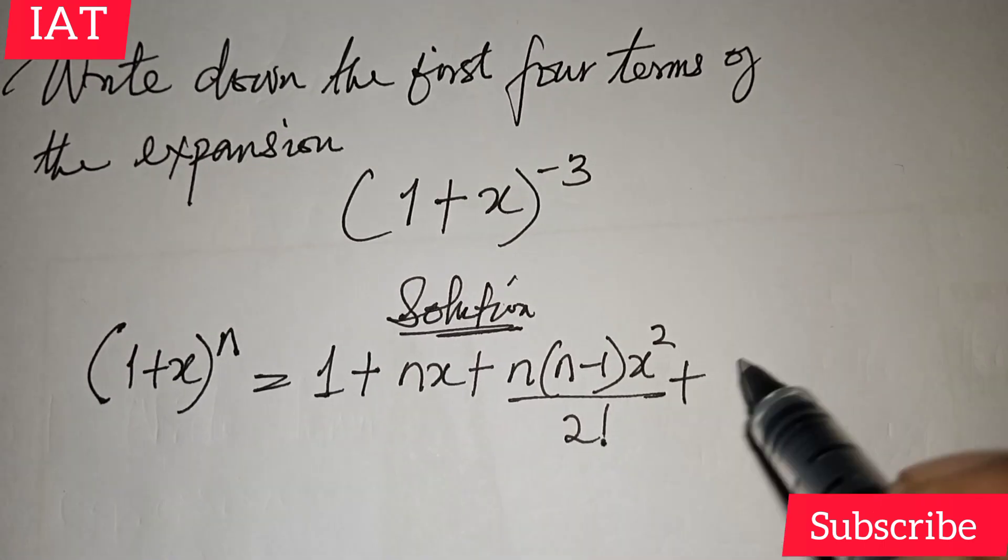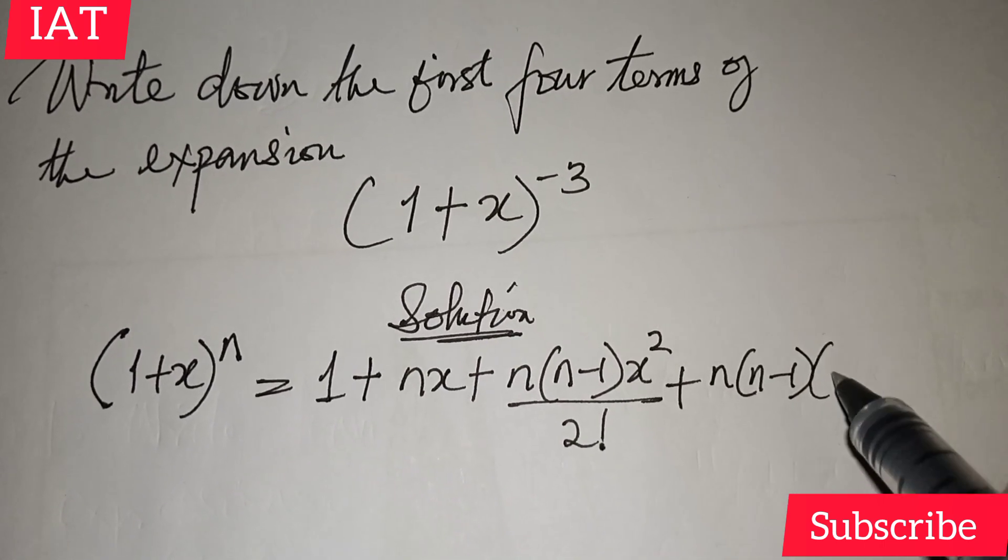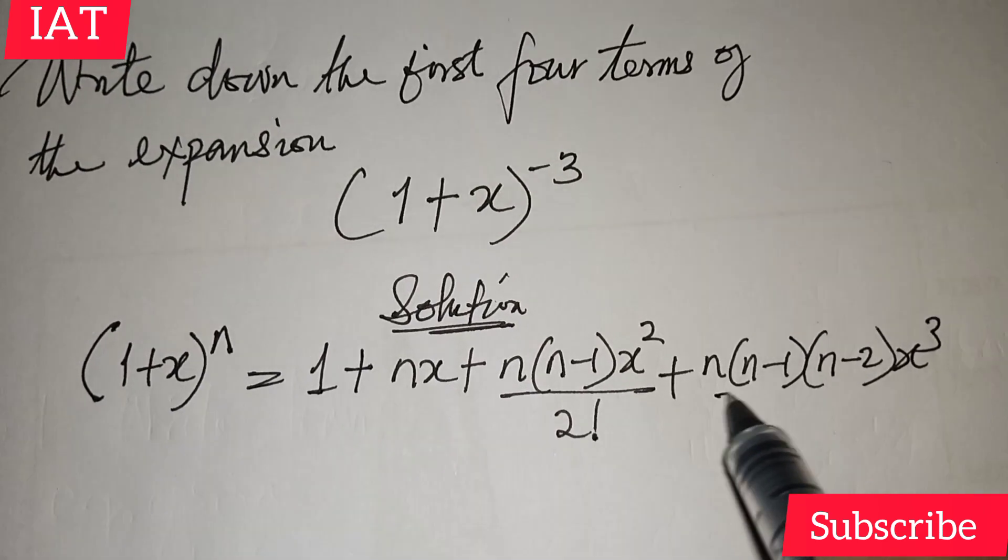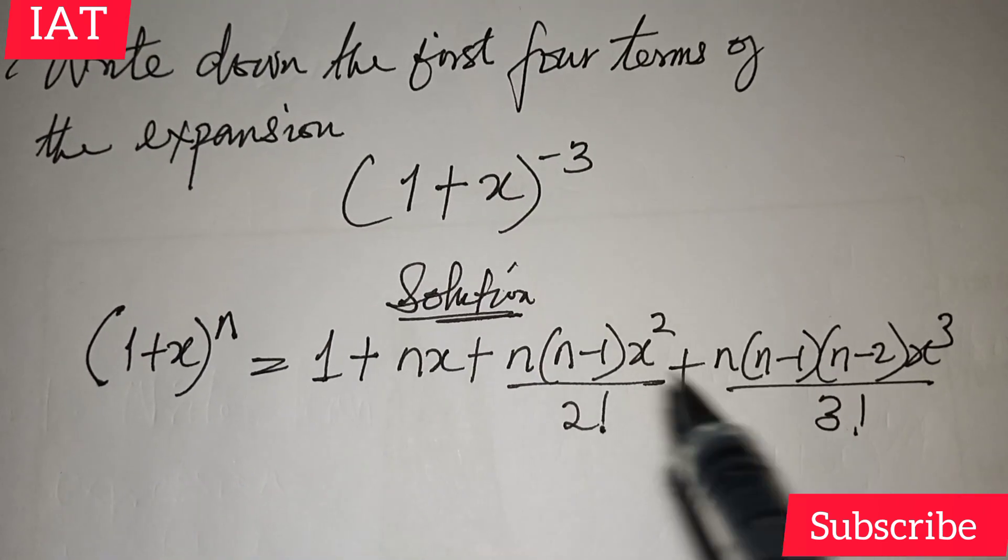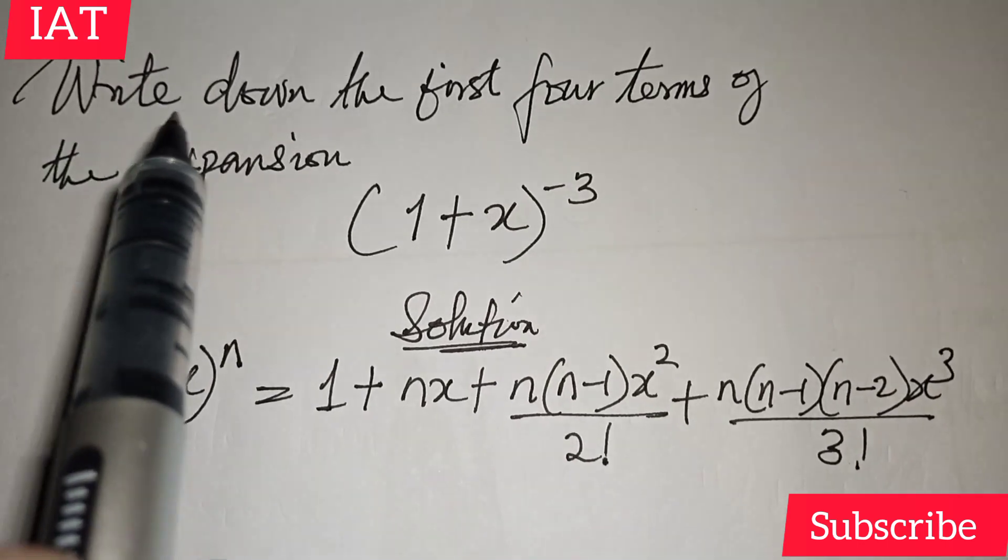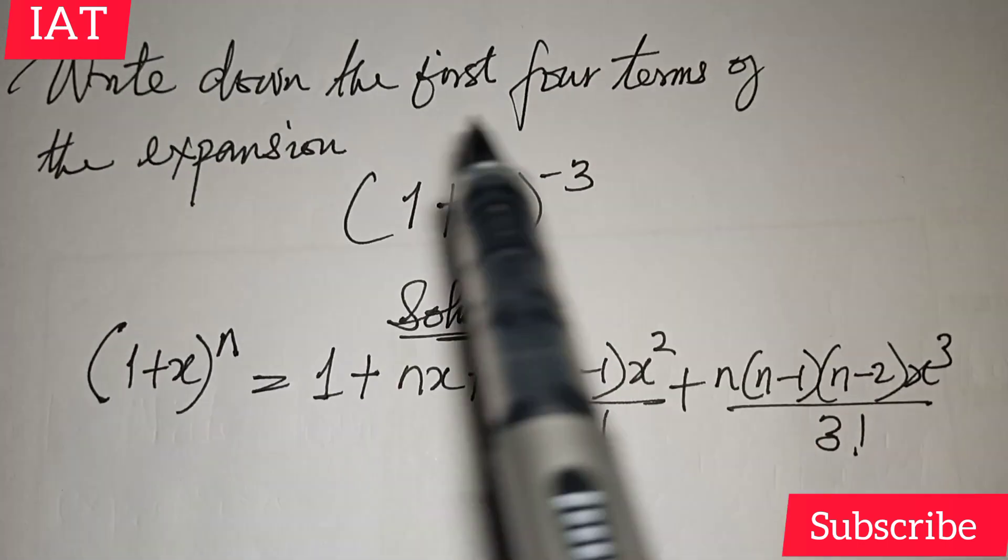Plus we have the fourth term to be n into (n-1) into (n-2), x to the power of 3, all over 3 factorial. So this is the first term, second term, third term, fourth term. This is how you write down the first four terms of the expansion.